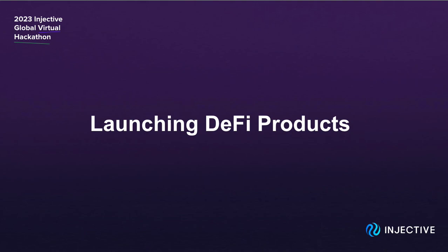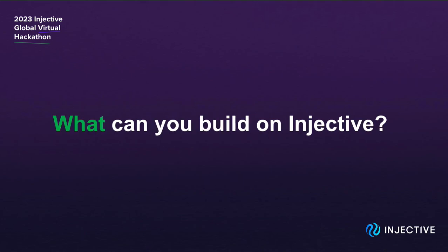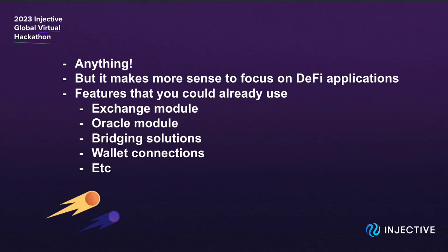What kind of products can you build on Injective? The answer is actually anything. Injective is a layer 1 blockchain with smart contract support, so you can build whatever you want. However, it makes more sense to focus on DeFi applications because Injective is a blockchain built for DeFi.